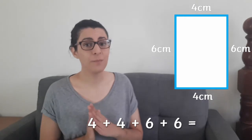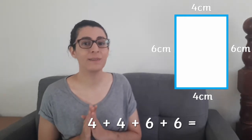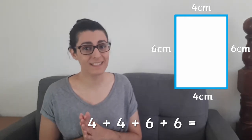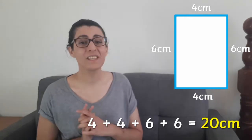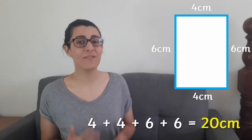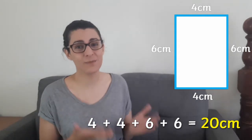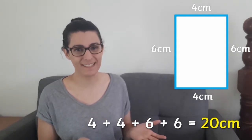Let's do the perimeter of a rectangle as an example. On this rectangle, two of the sides are four centimeters and two of the sides are six centimeters. So four plus four plus six plus six equals 20. The perimeter of the rectangle is 20 centimeters.